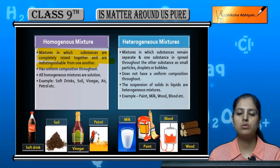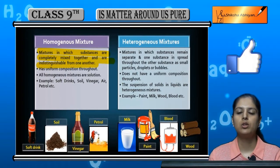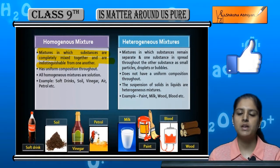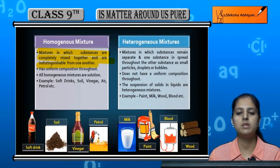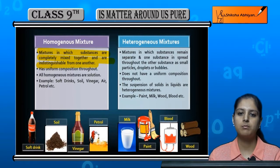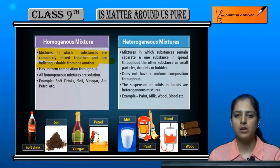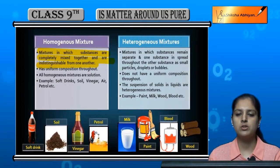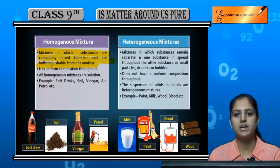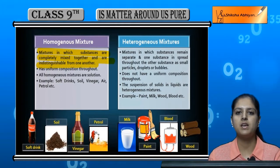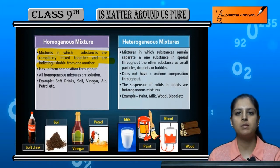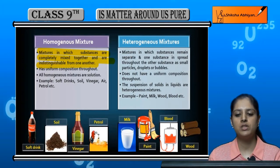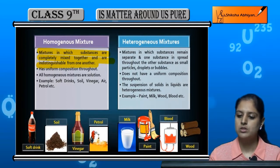A homogeneous mixture is one where, if you add salt to water and mix it, the salt dissolves in the water and you cannot tell by looking at it that salt was added. You cannot distinguish what has been mixed into the solution — what was added to the water cannot be identified visually. So these are called homogeneous mixtures.